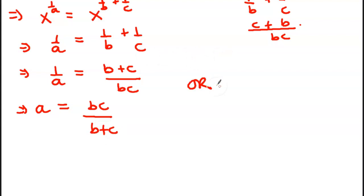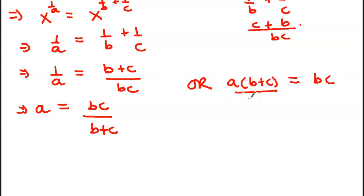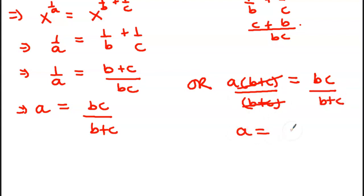Or we can cross multiply: A times (B plus C) equals BC, so dividing both sides by B plus C gives A equals BC over B plus C. That is our answer.